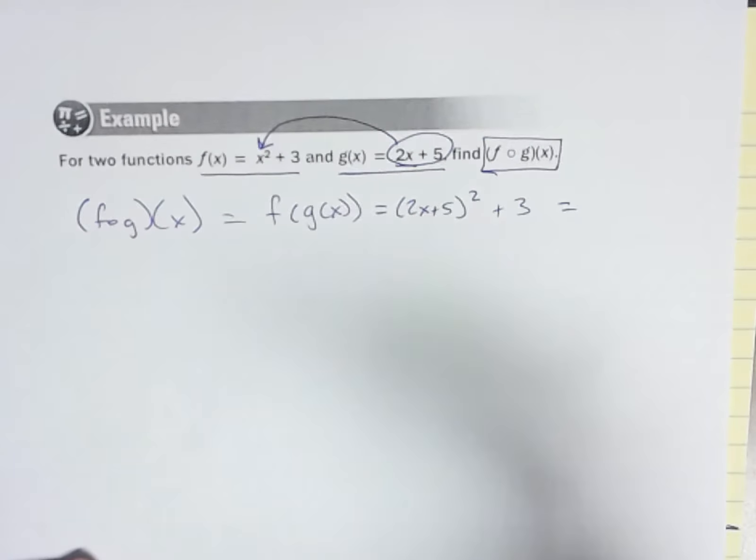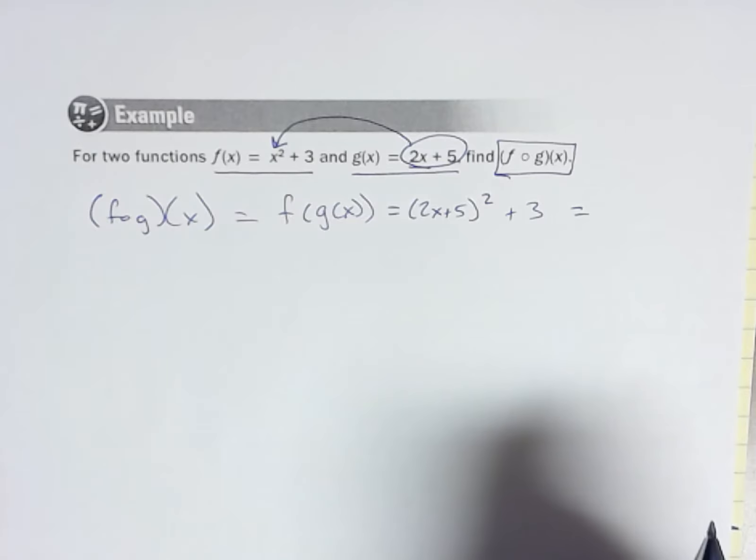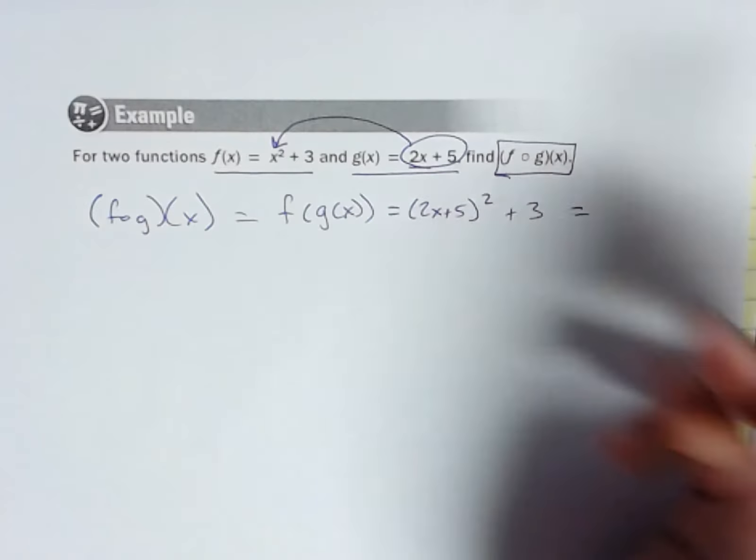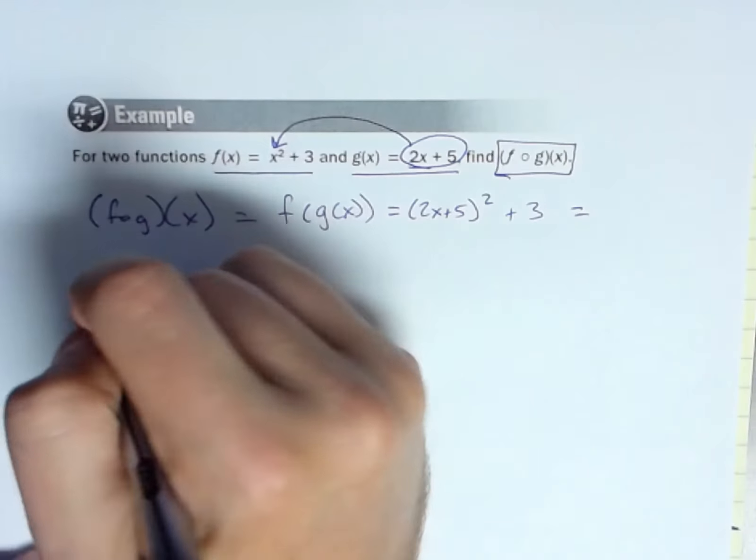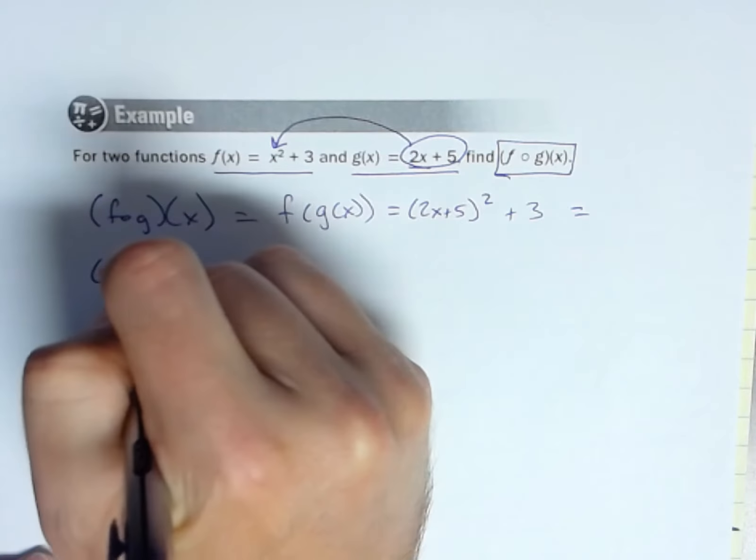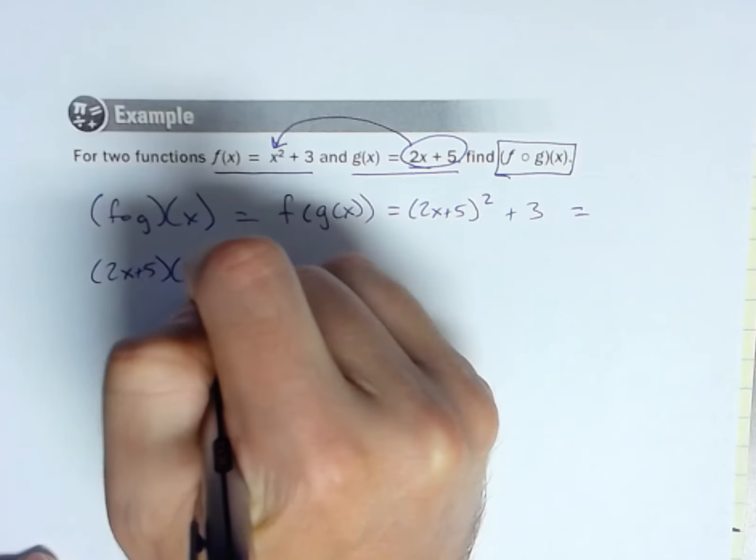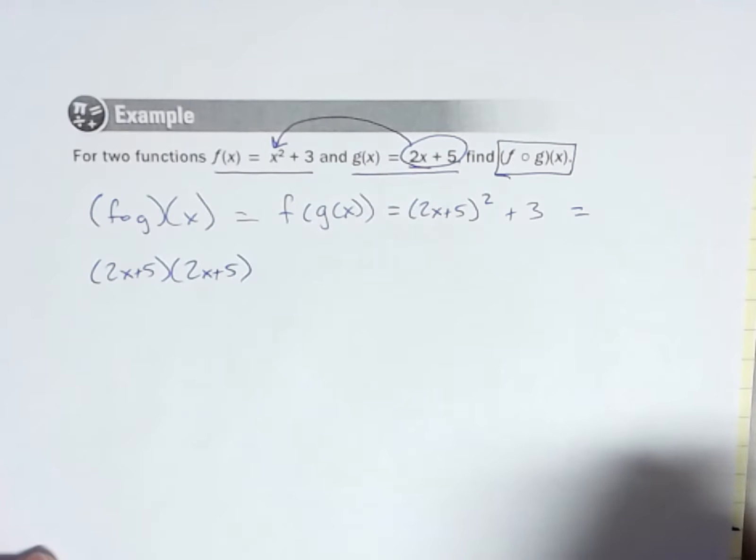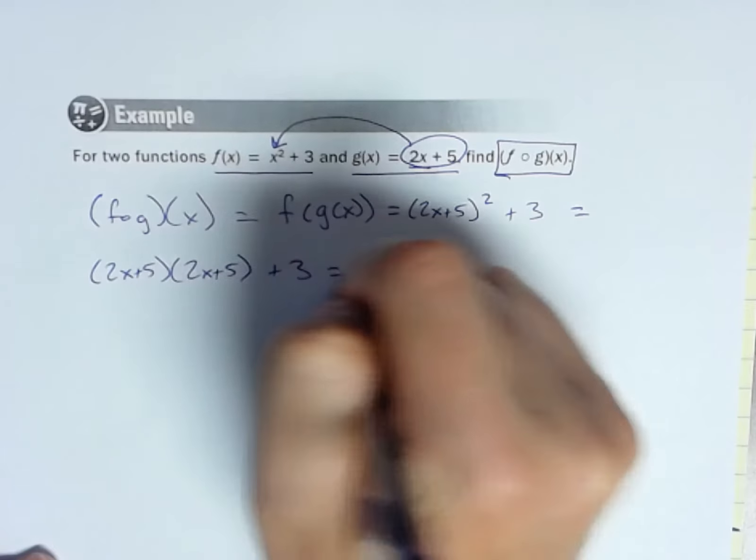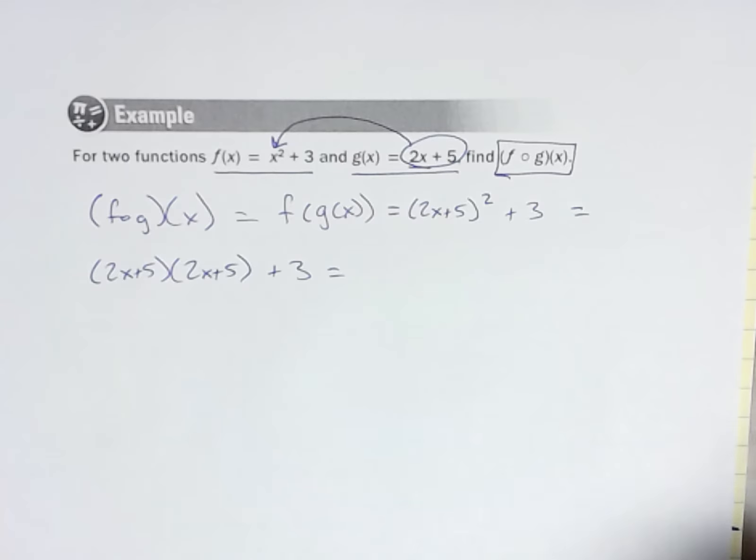All right, that's the composition. Now it's just a simplification problem. So let's go ahead and clean this thing up, see what we get. So if I multiply this out, in fact, I'll go ahead and show that: 2x plus 5 times 2x plus 5. And now let's multiply it out.